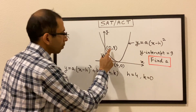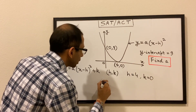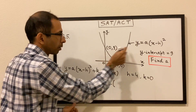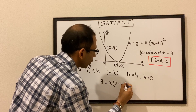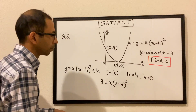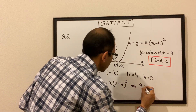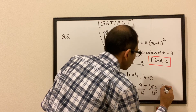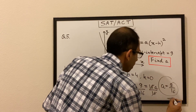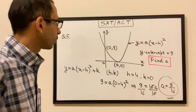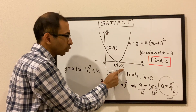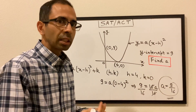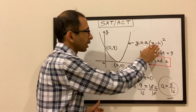Substituting the point (0, 9) with h equals 4 and k equals 0: 9 equals a times (0 minus 4)², which gives 9 equals 16a. Dividing both sides by 16, a equals 9 over 16. To reiterate: we identified the vertex as (4, 0), substituted the y-intercept point (0, 9) into the vertex form equation, and solved for a.